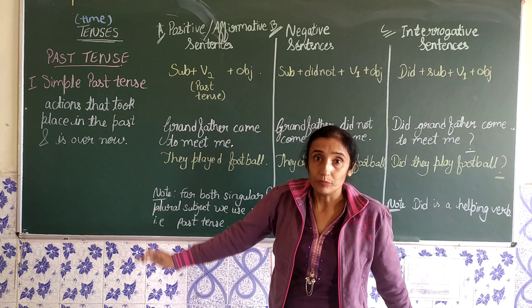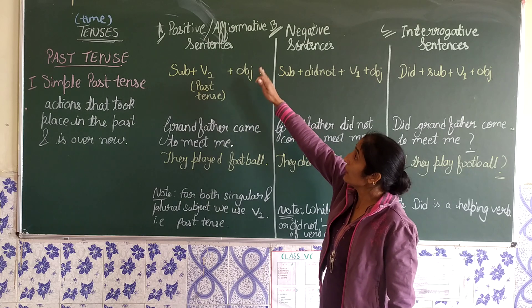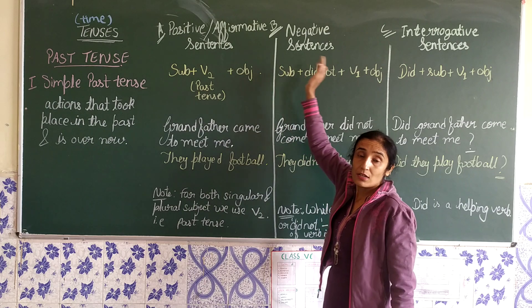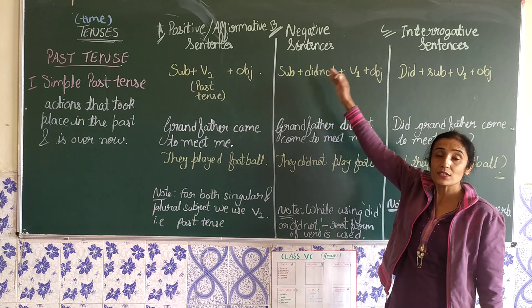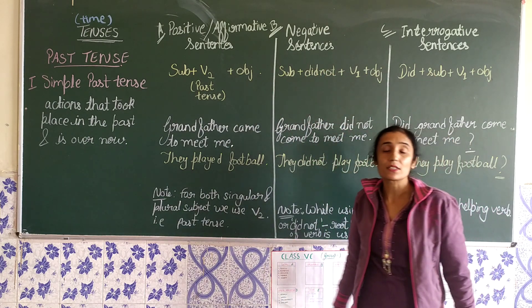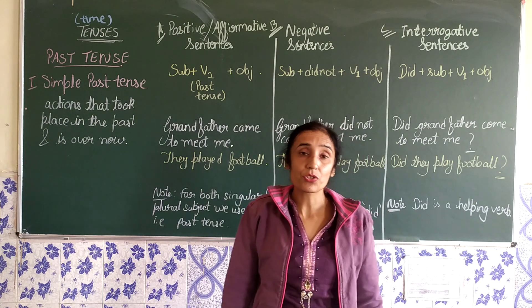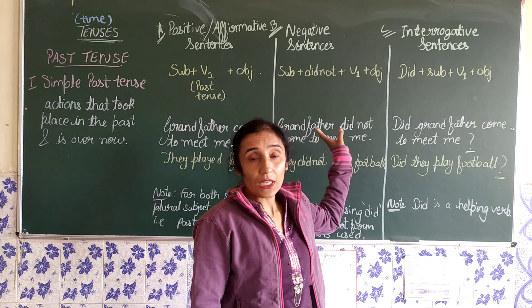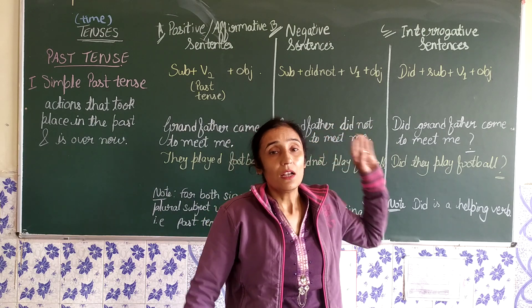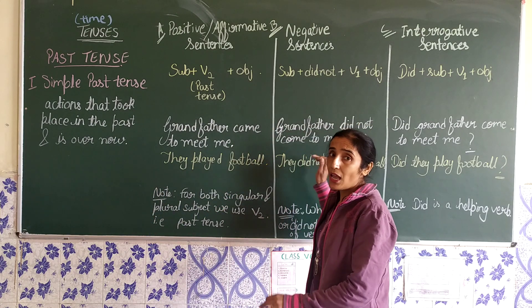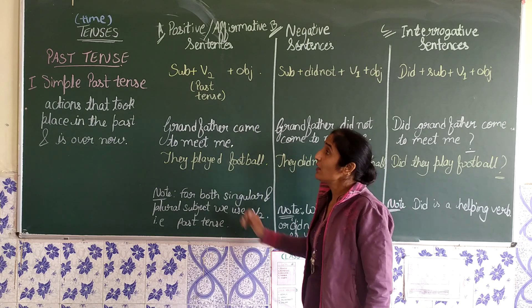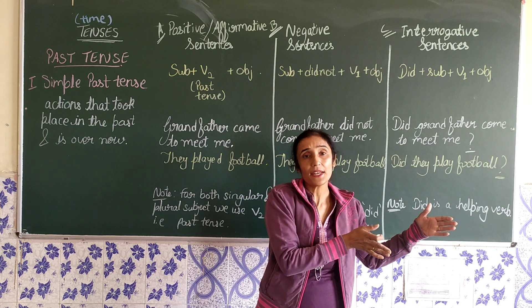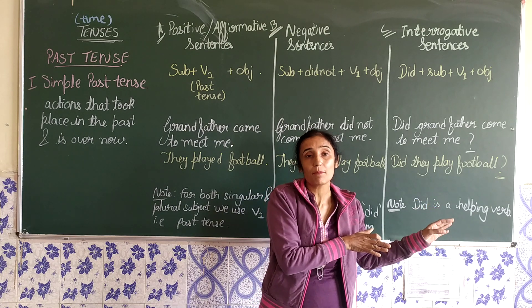Simple past tense may be understood through three types of sentences: positive sentences, negative sentences, and interrogative sentences. As we have already understood about simple present tense with these three sentence types, it is the same thing and it is very easy to understand. Simple past tense is an action which is already finished in the past.